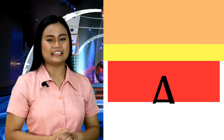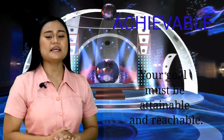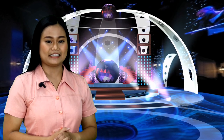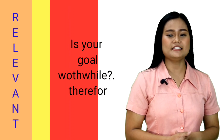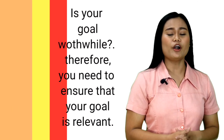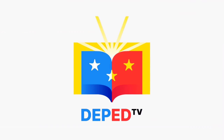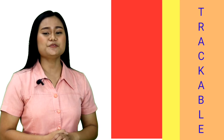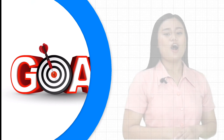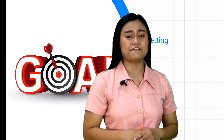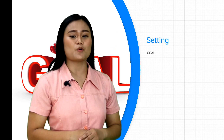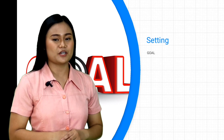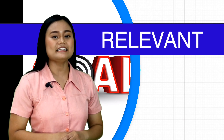Number three, A stands for achievable — your goal must be attainable and reachable, and you need to ask yourself how you are going to make it happen. Number four, R stands for relevant — you need to ensure that your goal is relevant. Number five, T stands for trackable — it helps you set a deadline to meet your goal. All in all, one of the best ways to stay physically active is to set your goal, and the most effective goals are based on SMART: specific, measurable, achievable, relevant, and trackable.